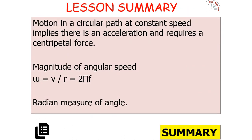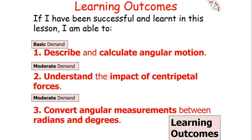In summary, motion in a circular path at constant speed implies there is an acceleration and requires a centripetal force. The magnitude of angular speed is given by ω = v/r, or 2π over the period, which will be covered next lesson. We also know how radians measure angles. If you have been successful today, you can describe and calculate angular motion, understand the impact of centripetal forces, and convert angular measurements between radians and degrees. Thank you very much for listening.